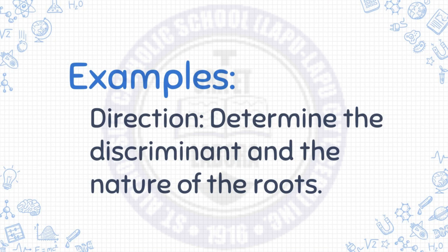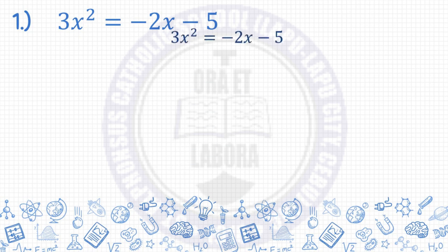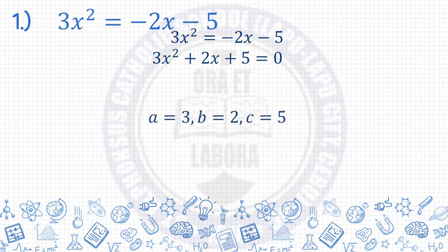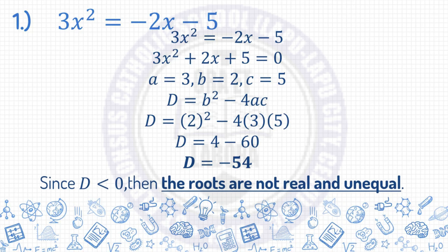Determine the discriminant and the nature of the roots. Number 1: 3x squared equals negative 2x minus 5. First, transform the given equation into its general form and identify the values of a, b, and c. Next, use the formula for the discriminant: d equals b squared minus 4ac. Substituting the values, d equals 2 squared minus 4 times 3 times 5. d equals 4 minus 60. Since 4 minus 60 is negative 56, and d is less than zero, then the roots are not real and unequal.